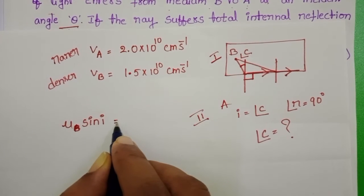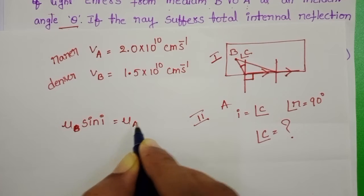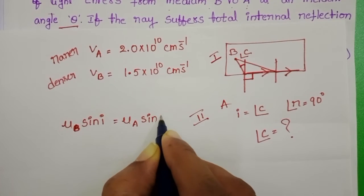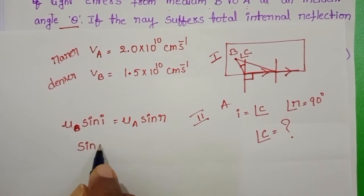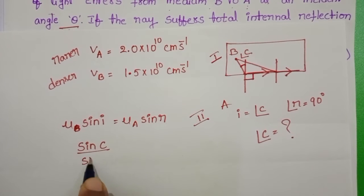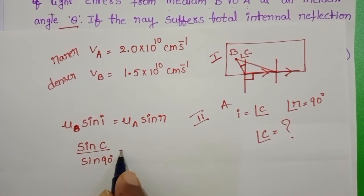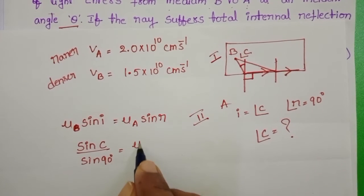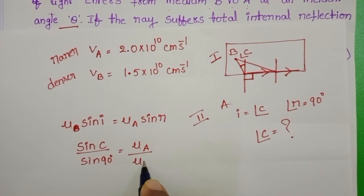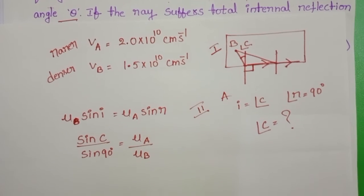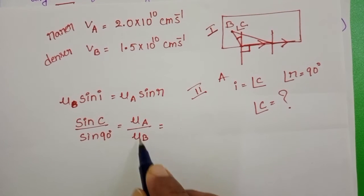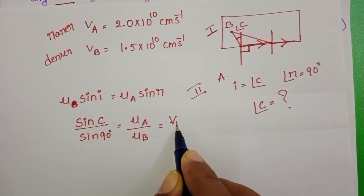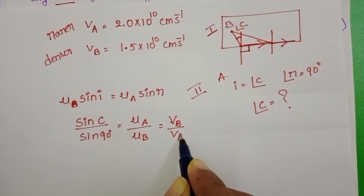Mu_B × sine(I) = Mu_A × sine(R). From this, sine(C) / sine(90°) = Mu_A / Mu_B. We know that refractive index is inversely proportional to the speed of light, so Mu_A / Mu_B = V_B / V_A.